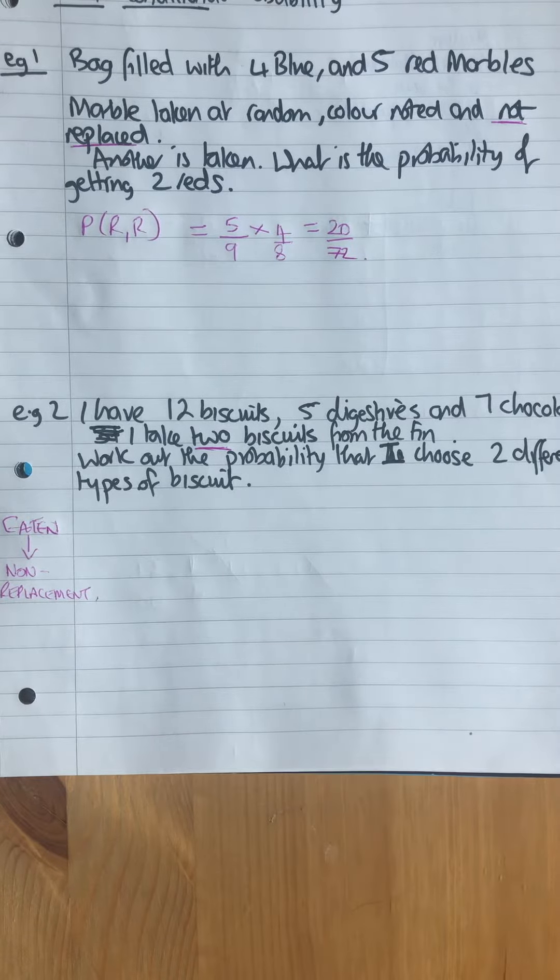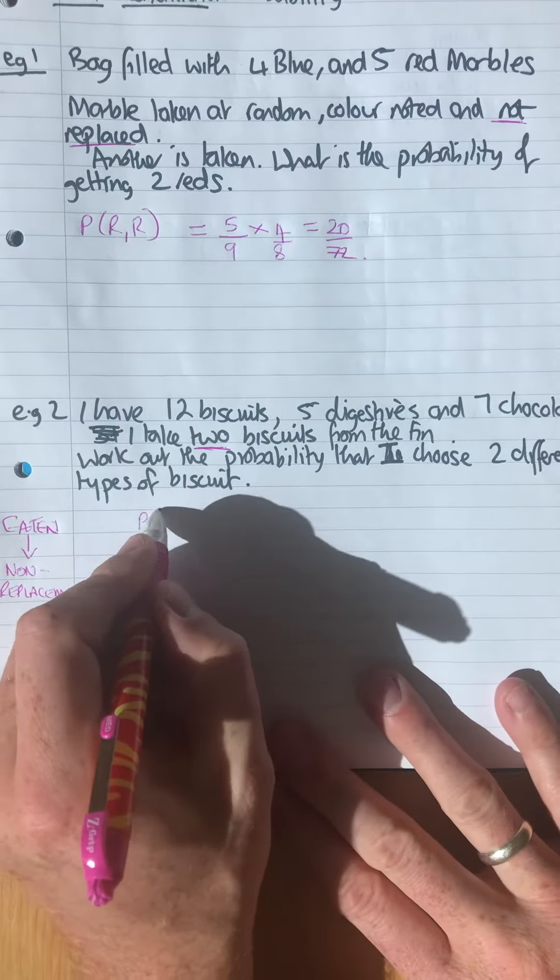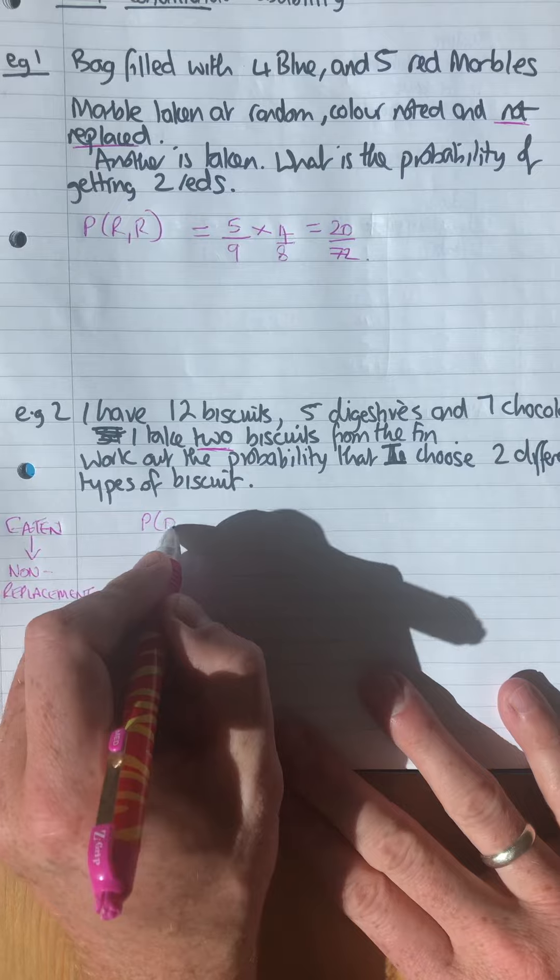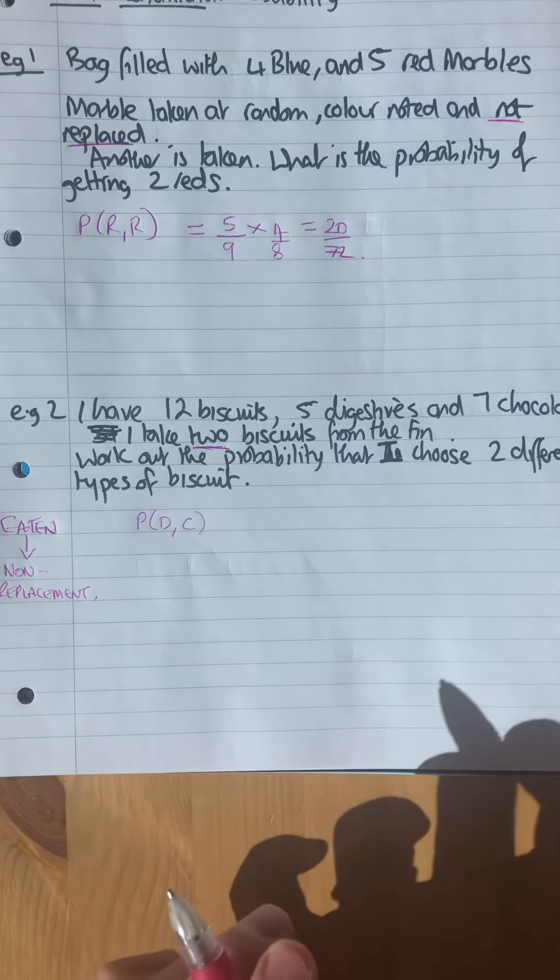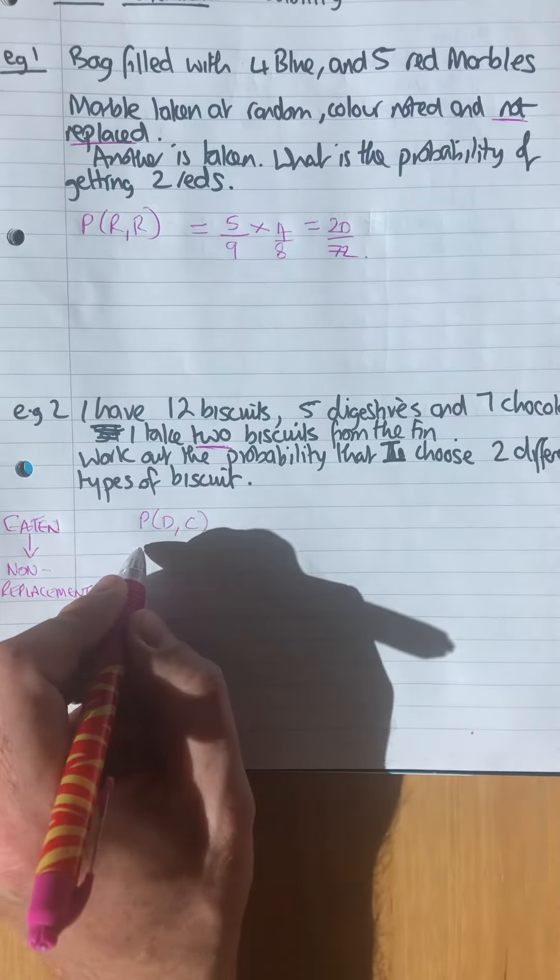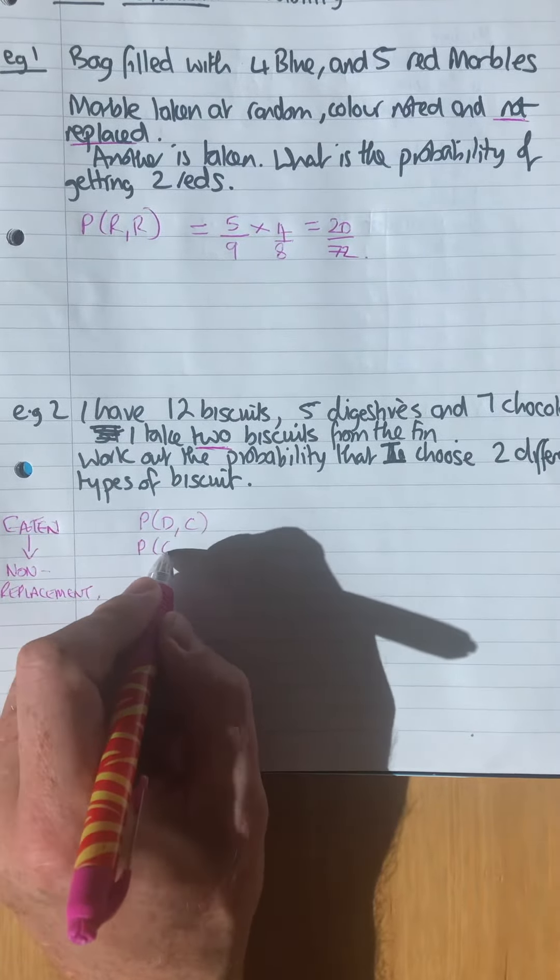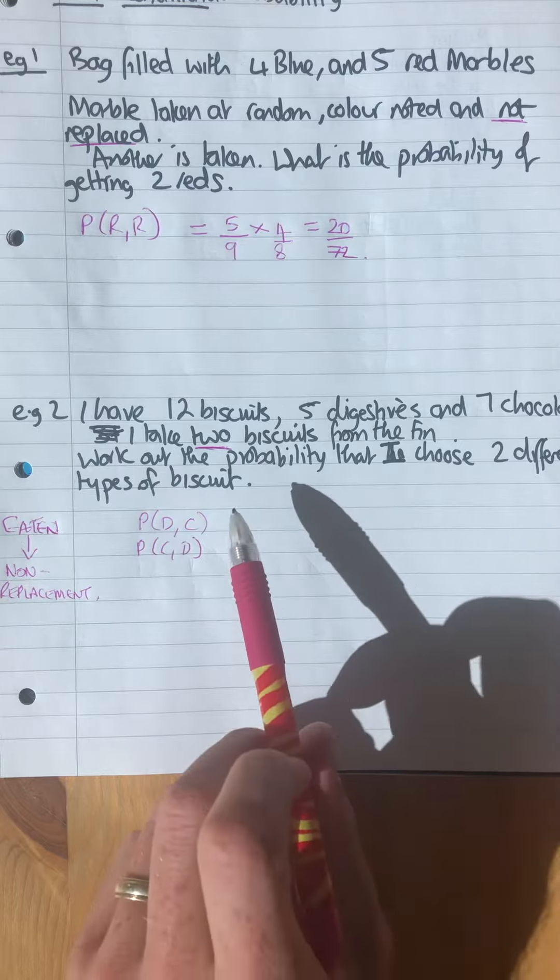So you want the probability that I choose two different types of biscuits. You can either have digestive and chocolate, or you can have chocolate and digestive. Those are the two ways of getting two different types of biscuits, so just be careful there's two different ways.